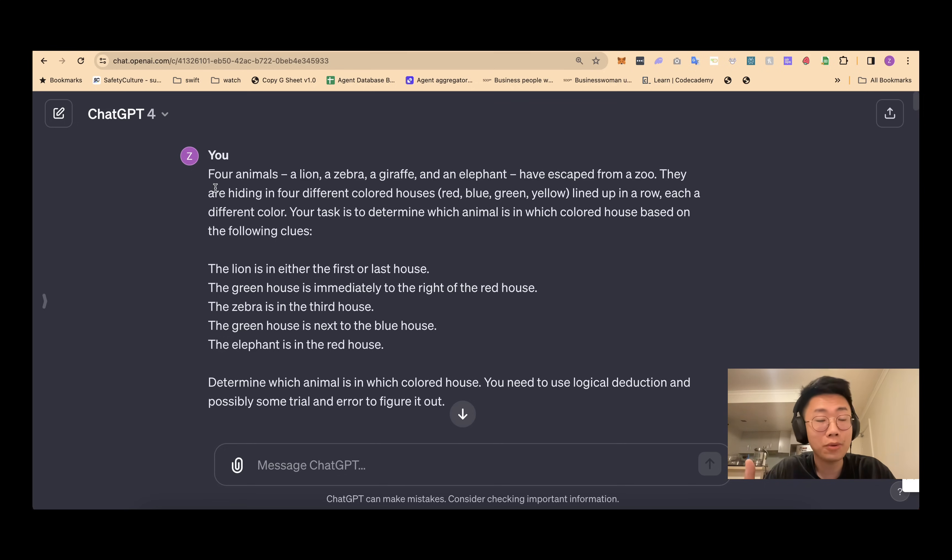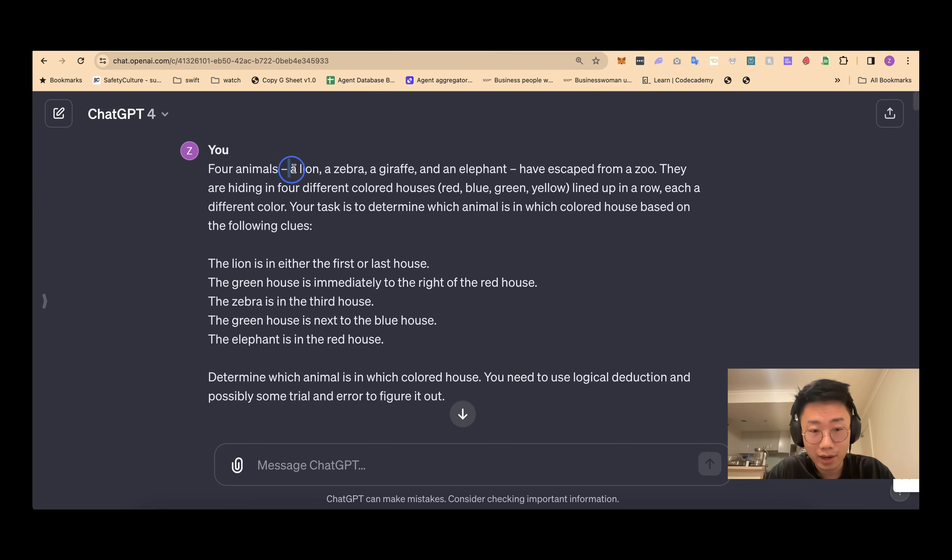So I asked GPT to generate tasks that can be used to test system two level thinking. So the task is, there are four animals: a lion, a zebra, a giraffe, and an elephant. They are located in four different houses with different colors: red, blue, green, yellow. And the task is to determine which animal is in which colored house based on the following clues. So the lion is either in the first or the last house. And the green house is immediately to the right of the red house. The zebra is in the third house. The green house is next to the blue house. And the elephant is in the red house. So this is actually a pretty complicated problem. For me, it is not even clear how should I get started. It is not that easy.